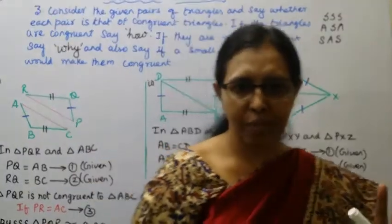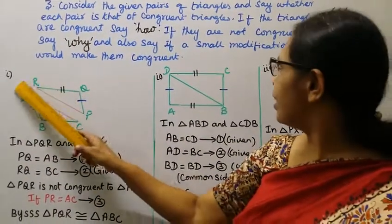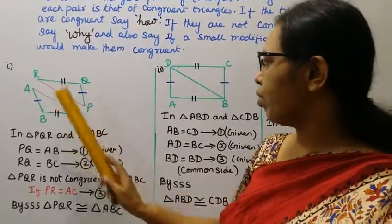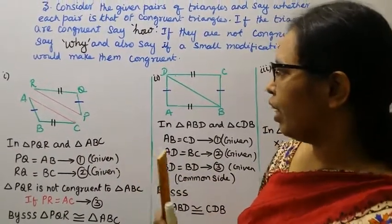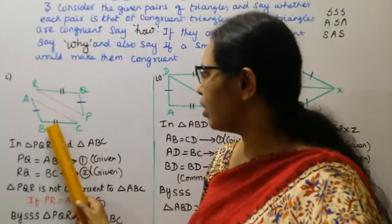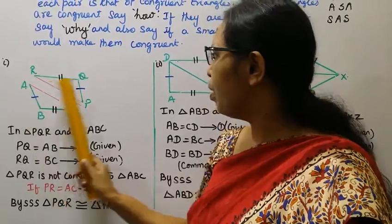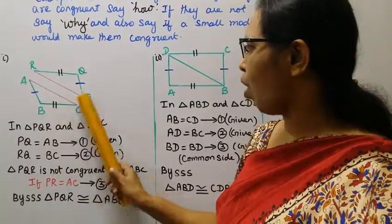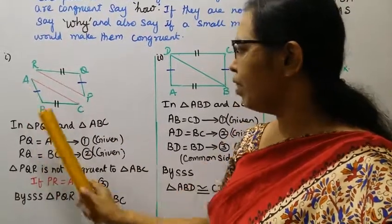Now we are going to the first problem. Triangle PQR and triangle ABC. In triangle PQR and triangle ABC, PQ is equal to AB — that is one mark. The diagram shows one line and two lines, same as AB equal to PQ.